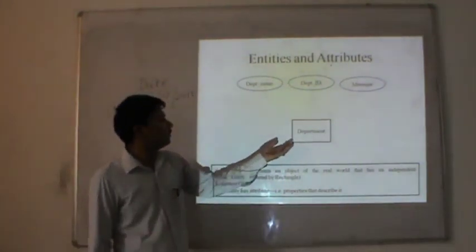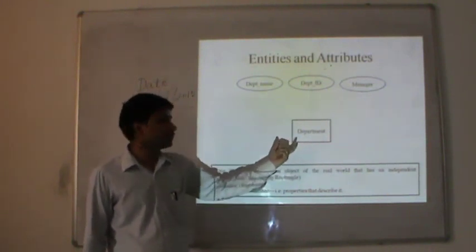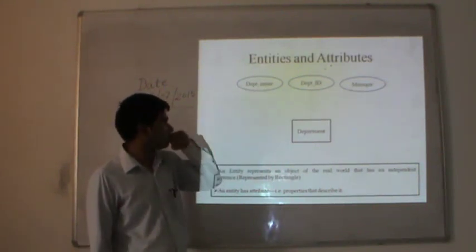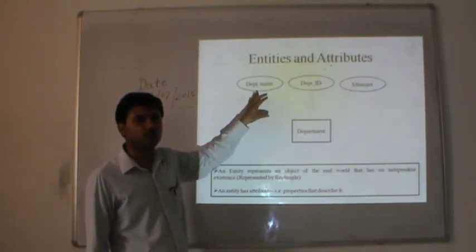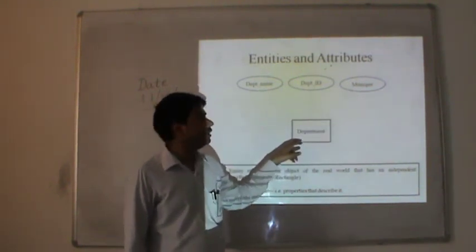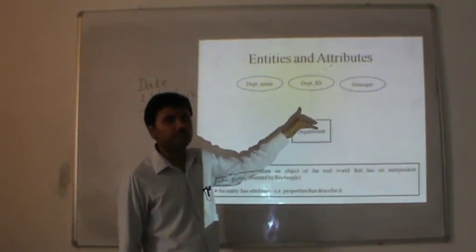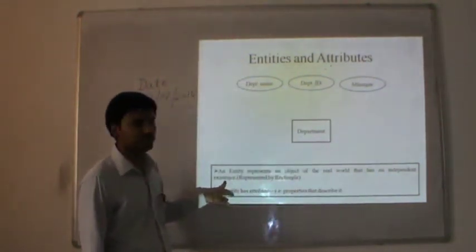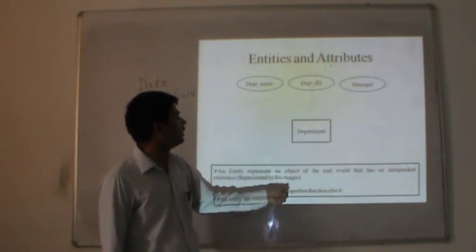Here we are showing an example of how to represent entities. Entities are represented with the help of rectangles. Attributes are represented with oval-like shapes — not a complete circle but more oval — connected to the entity in a balloon-type structure. An entity represents an object of the real world that has an independent existence; these are represented by rectangles. An entity has attributes, i.e., properties that describe it.